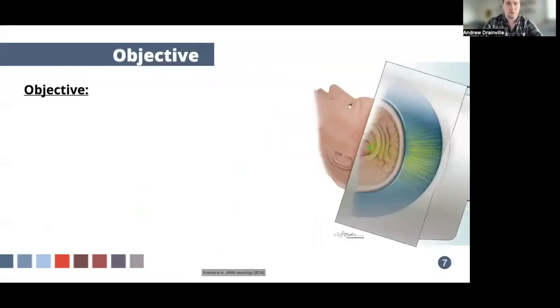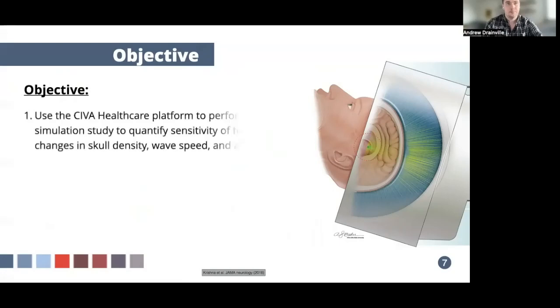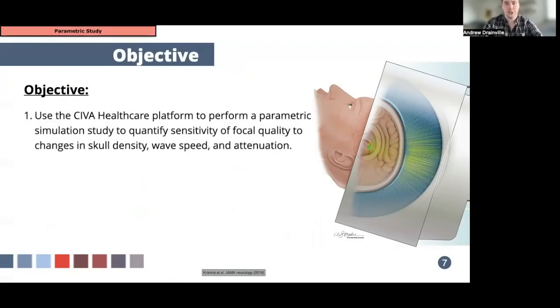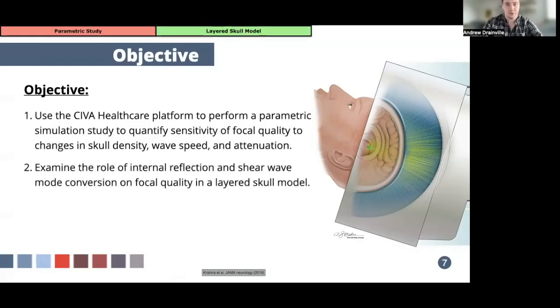So we want to provide a better understanding of the role of skull properties in transcranial focusing, particularly with a focus on numerical modeling. For this, we have three primary objectives. The first is to provide a parametric simulation study using the Siva Healthcare platform that quantifies the sensitivity of ultrasound focal quality to changes in material properties such as density, wave speed, and attenuation, which in real-world application, the variation of these parameters may arise due to uncertainty in conversion from CT data. The second objective is to examine the significance of internal reflection and mode conversion and how these factors can change depending on the degree of skull heterogeneity.